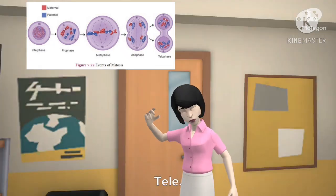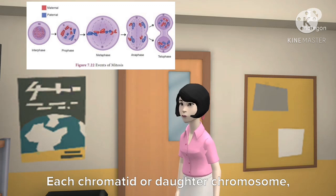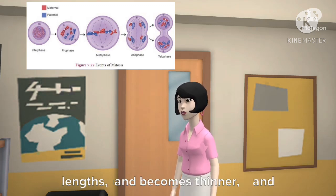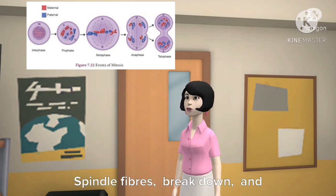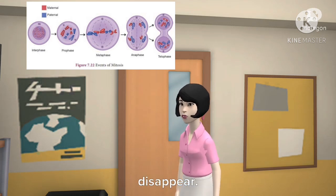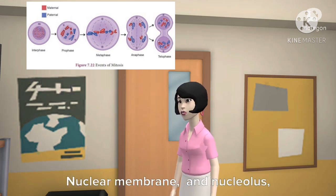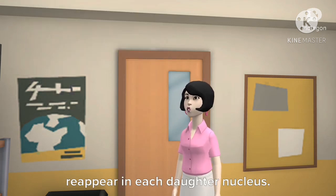Telophase — 'tele' means end. Each chromatid, or daughter chromosome, lengthens and becomes thinner and turns into a network of chromatin threads. Spindle fibers break down and disappear. The nuclear membrane and nucleolus reappear in each daughter nucleus.